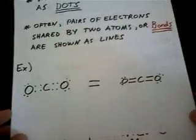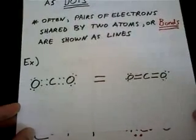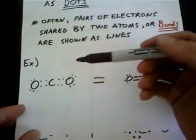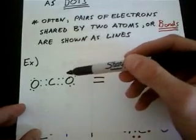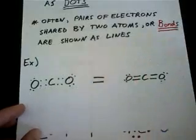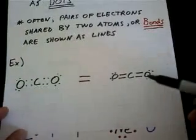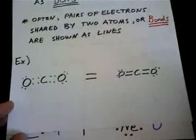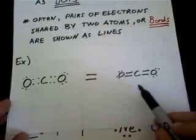So here we have the Lewis structure for carbon dioxide, CO2. In the structure on the left here, the shared pairs of electrons are actually shown as pairs of dots, whereas this one on the right here, the shared pairs of electrons are shown as lines.